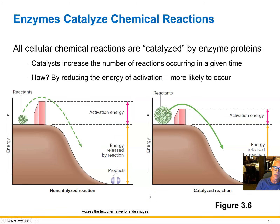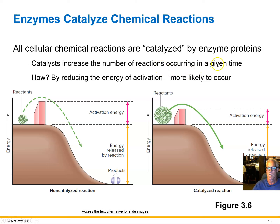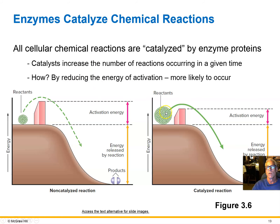All of those reactions in the cells in our bodies are catalyzed by enzymes — proteins that act as catalysts. They increase the number of reactions occurring in a given amount of time once the reactants are available and the enzyme is turned on; they just increase the reaction rate. In order to start a reaction, you have to invest a little bump of energy — the activation energy.